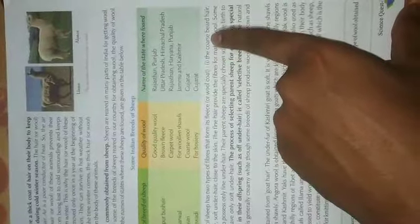This is the video for Class 7 Science Chapter 3. The hairy skin of sheep has two types of fiber that form its fleece or wool coat: the coarse beard hair and the fine soft under hair close to the skin. The fine hair provides the fibers for making wool.